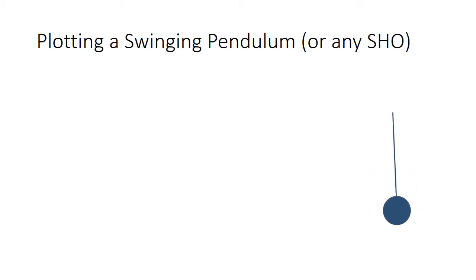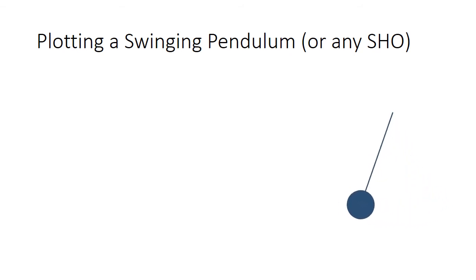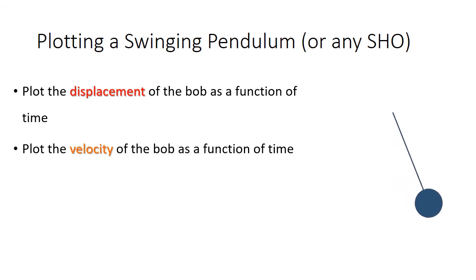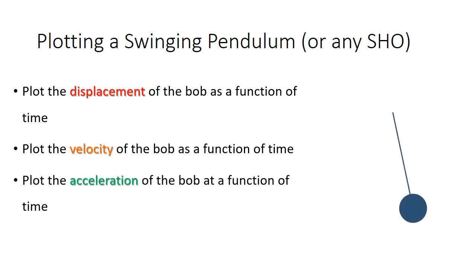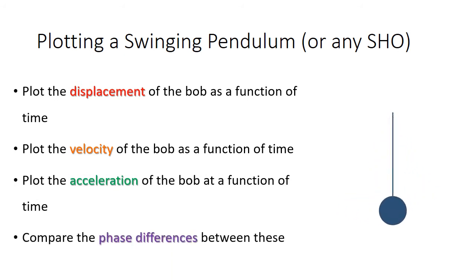In this video I'm going to show you how to plot various time functions for a swinging pendulum. Really this is good for any simple harmonic oscillator, not just a pendulum. We'll be plotting the displacement of the pendulum bob as a function of time, its tangential velocity as a function of time, its tangential acceleration as a function of time, and we'll compare the phase differences between these three graphs.